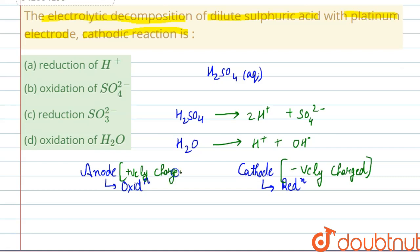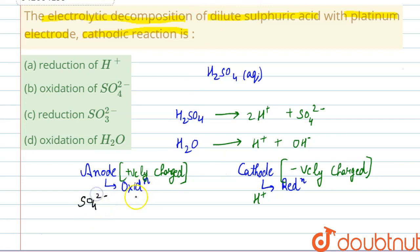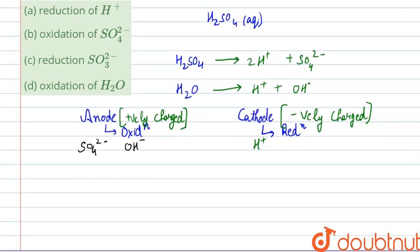Since opposite charges attract each other, at the cathode it will attract H⁺ ions. H⁺ ions will be present at the cathode because in both dissociation reactions the positive part is H⁺. At the anode, the negatively charged particles — SO₄²⁻ ion as well as OH⁻ ion — will be present.